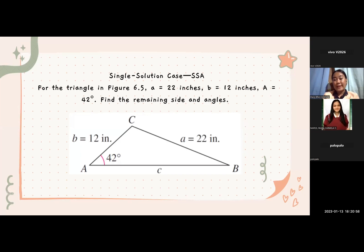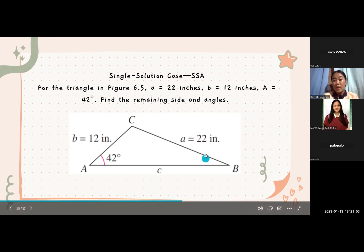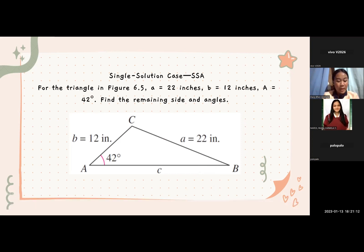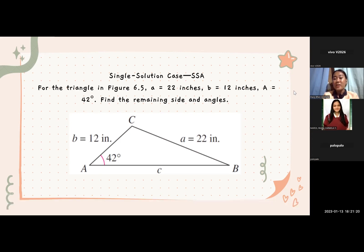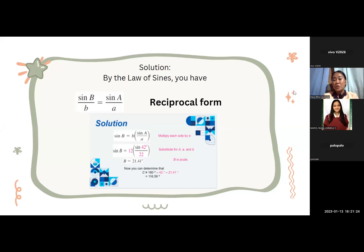In the following example, the given angle will always be angle A and the given sides will be side A and B. If you are given a different set of variables, feel free to change them to simulate the steps provided here. Single solution case, SSA for this triangle in figure 0.5, a is equal to 22 inches, b is equal to 12 inches, and angle A is equal to 42 degrees.